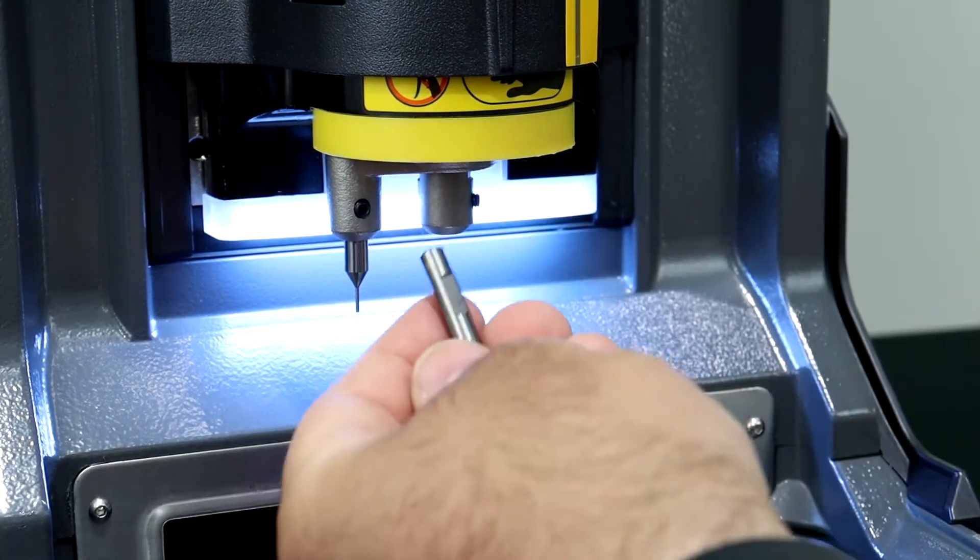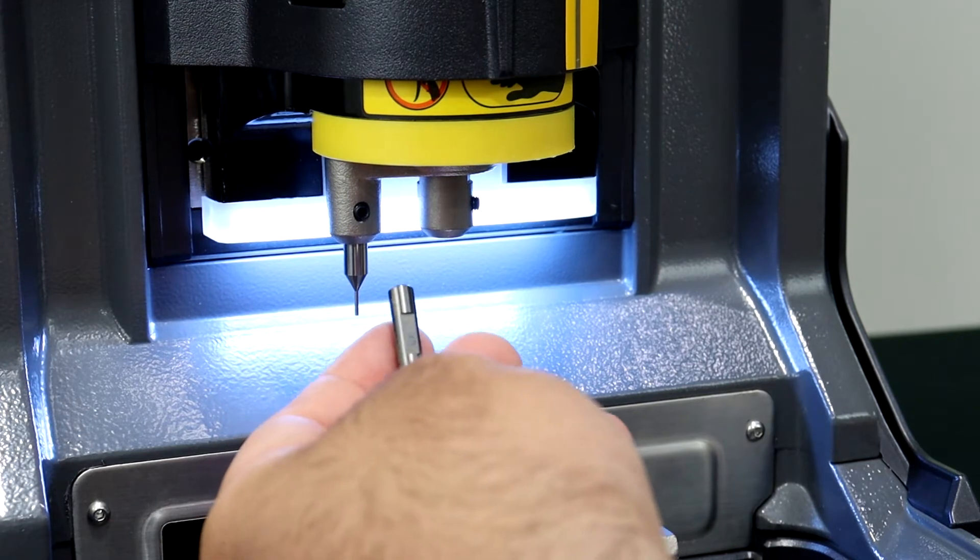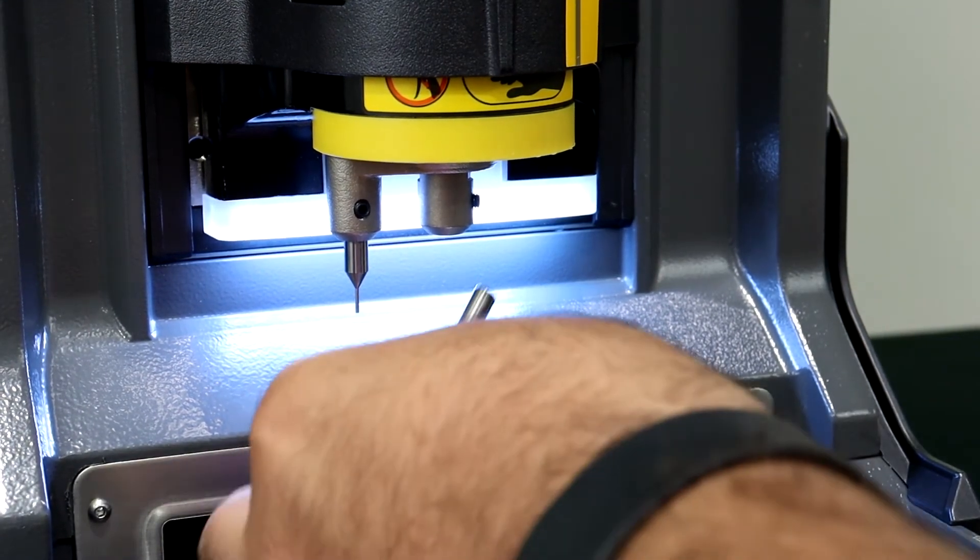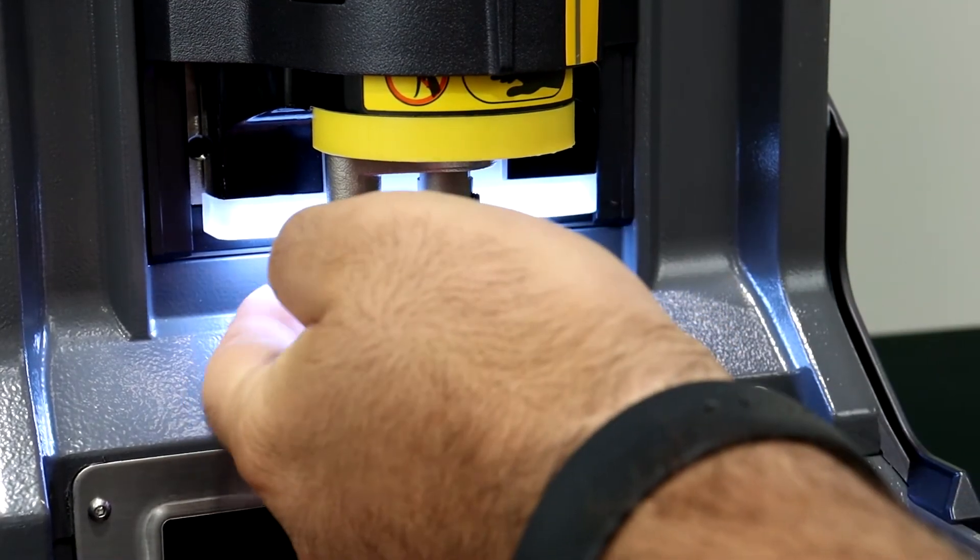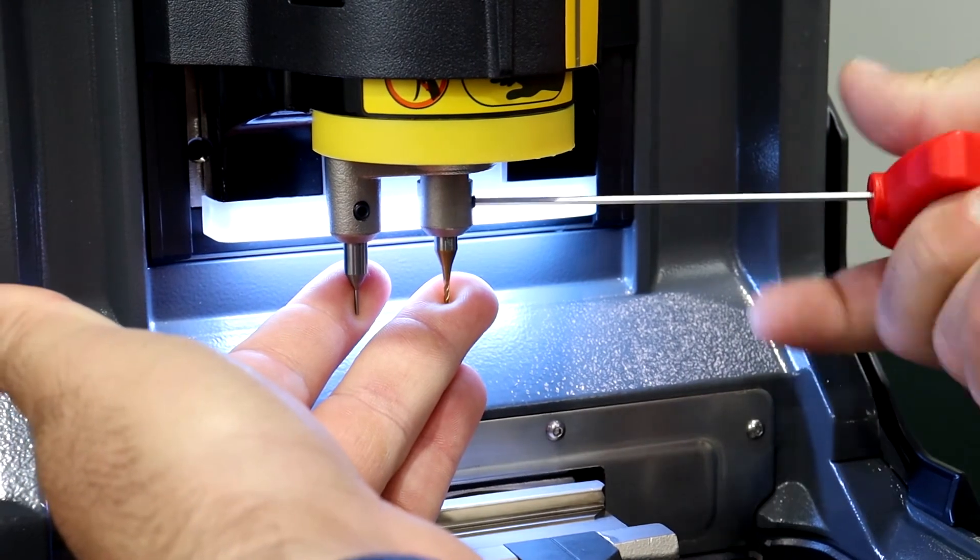Next we're going to put the cutter in and we do have a little notch taken out of this one and that's where your screw goes. So our screw is pointing over here. So we're going to put the cutter in like this. Again, pop it all the way up and tighten that one up.